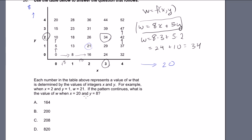Well, in that situation, w is equal to 8 times x, which is 20, plus 5 times y, which is 8, which is equal to 160 plus 40, which is equal to 200. And that is choice B. Next problem.